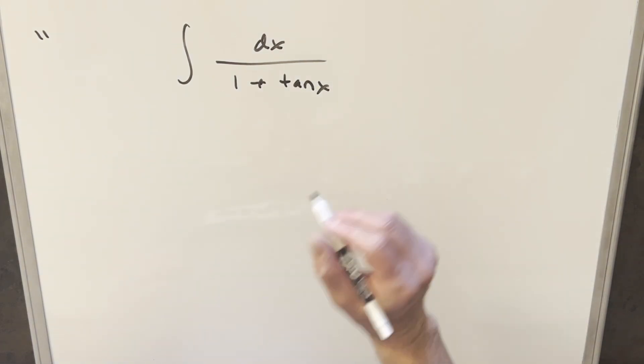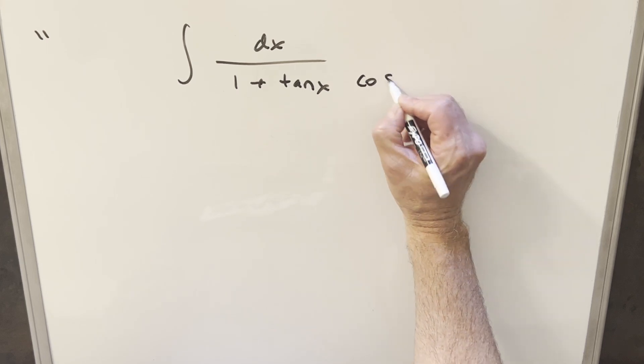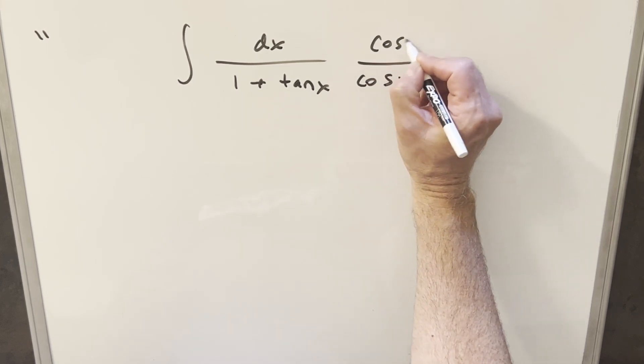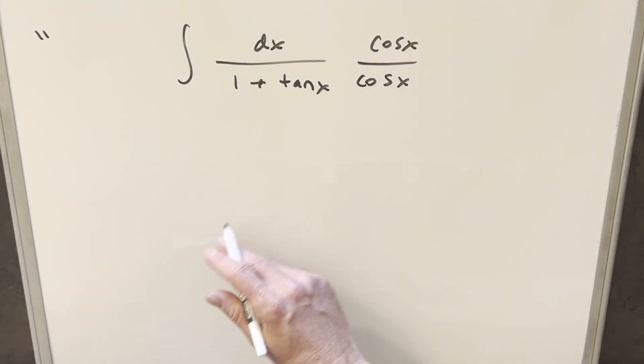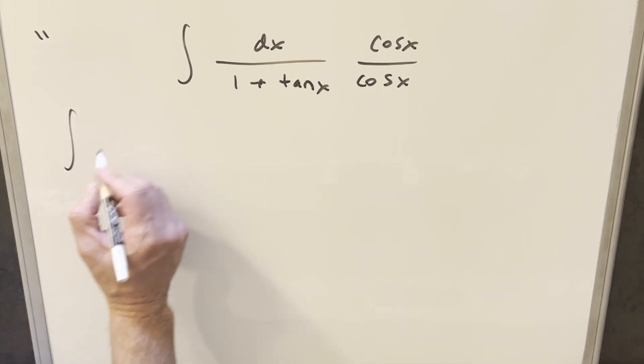So the first thing I'm going to do is multiply in cosine x over cosine x. This will help me get everything in terms of sines and cosines, so when we do that,